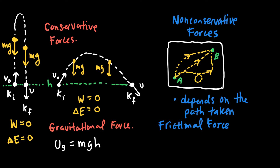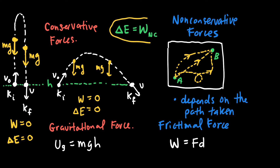To express how much work was done by a non-conservative force, we use the work equation: the magnitude of the force times the distance over which that force is exerted. The reason for distinguishing conservative from non-conservative forces is the equation ΔE = W. Any change in energy in a system equals the work done on that system. What we mean by W is really W-NC — the work done by non-conservative forces, those forces which depend on the path taken. For any conservative force, like gravity, the work done is zero when an object returns to its original position.